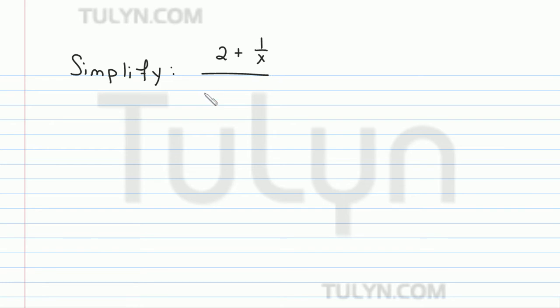So the first thing I'm going to do is rewrite this as 2 over 1 plus 1 over x, and then 4 over 1 minus 1 over x squared.